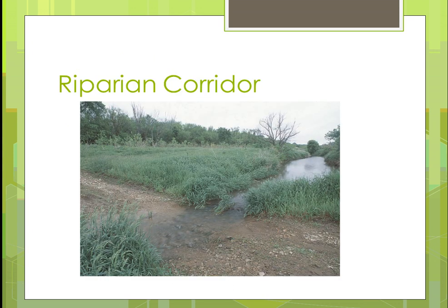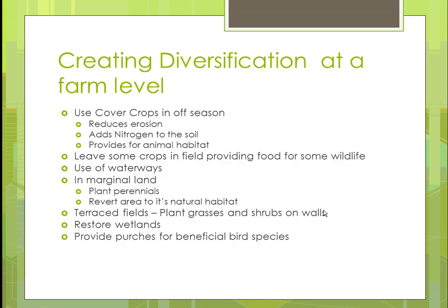Here's an example of a riparian corridor. You can see the water coming through, crossing this road they use. There are grasses here and some trees off to the side, with crops on either side of the waterway. If you needed the water, you could certainly use it in the fields for vegetables. Here you have native species of plants that will help bring back those beneficial insects.